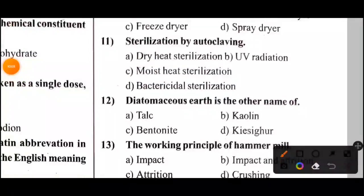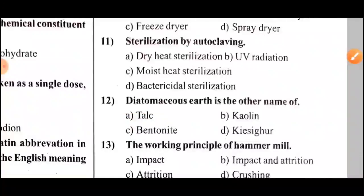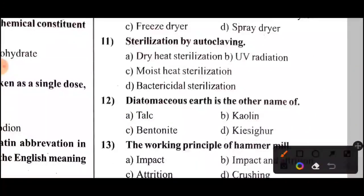Following question: Diatomaceous Earth is the other name of — options A, B, C, D. The answer is Option D — Kieselguhr.